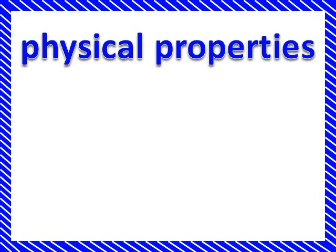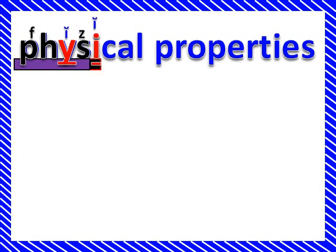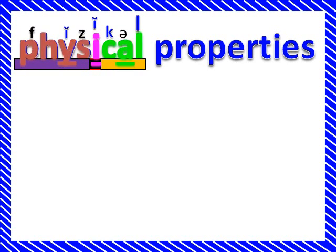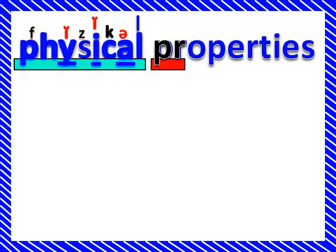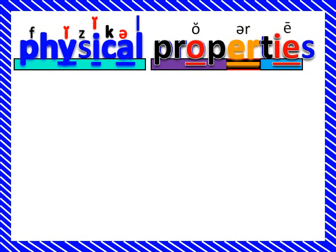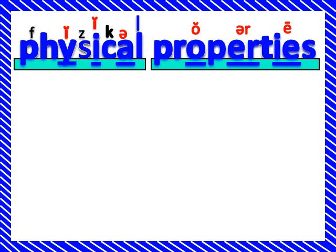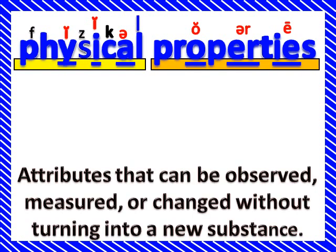Physical property. Physical properties. Physical properties are the attributes that can be observed, measured, or changed without turning into a new substance.